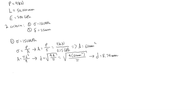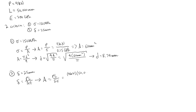For Case 2, the deformation cannot exceed 25 millimeters. Using the deformation formula δ = PL/AE, we rearrange to solve for area: A = PL/(δE). Plugging in P = 9 kilonewtons, L = 50,000 millimeters, δ = 25 millimeters, and E = 200 gigapascals, we get an area of 90 mm².